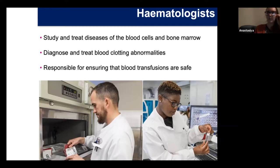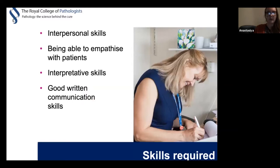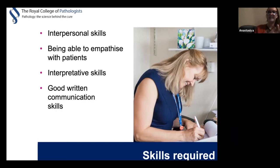Haematologists mainly look at people with blood disorders — things like anaemia, leukaemias which are blood cancers, thrombosis where people are predisposed to blood clots which can be life-threatening, and bleeding problems like haemophilia. As before, a lot of skills are transferable between specialties. You need good attention to detail and empathy — if you're dealing with people who have cancers, you need to be able to break bad news in an empathetic way. Haematology affects very young and very old patients.